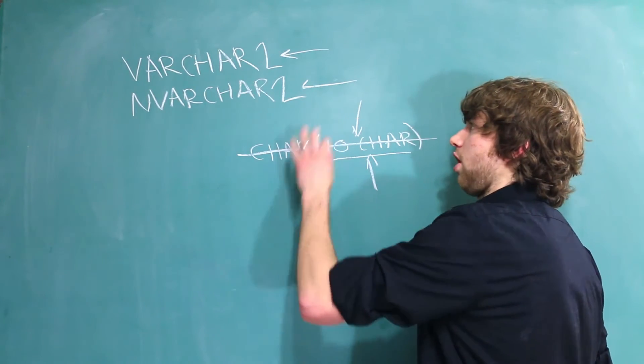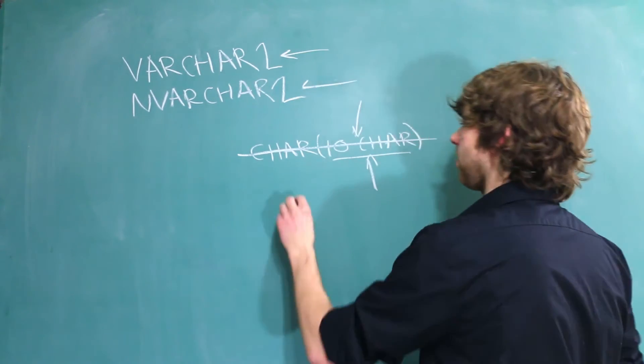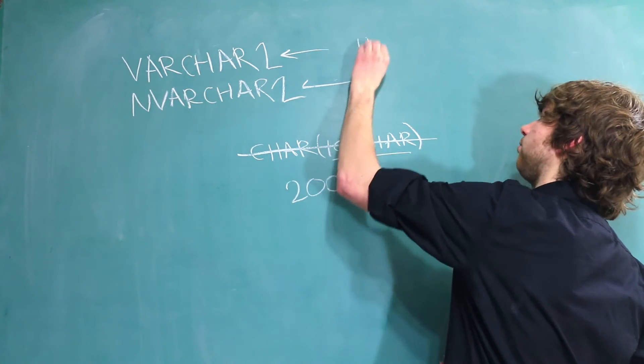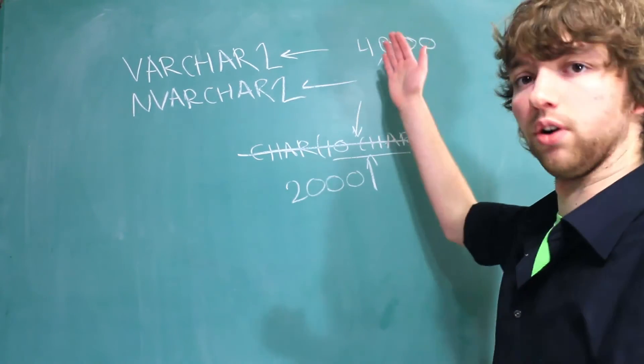One other difference between the char and the varchar2 data types is the number of bytes it can store. Char is limited to 2,000, whereas varchar is limited to 4,000. So by using varchar2, you automatically allow for double the storage.